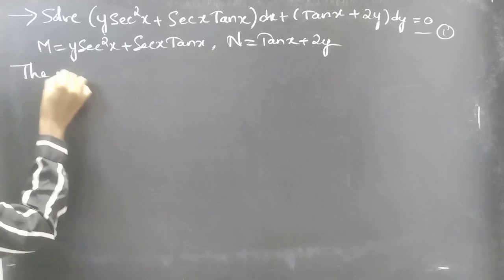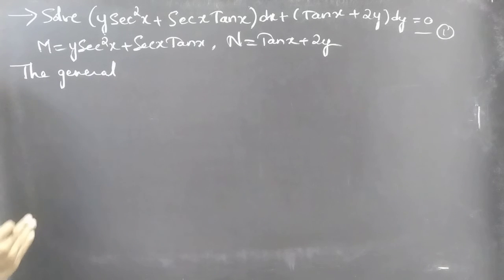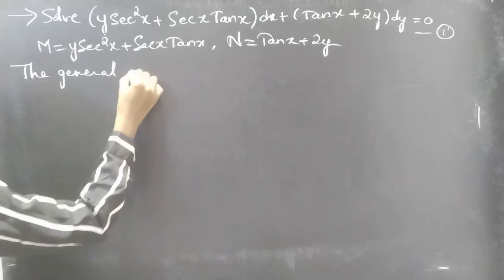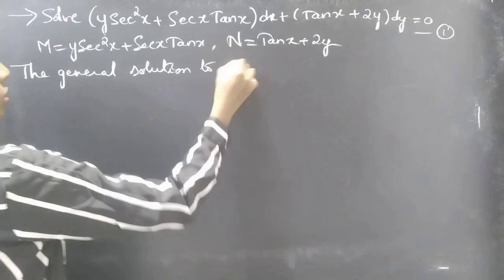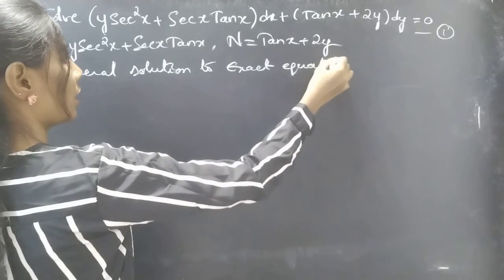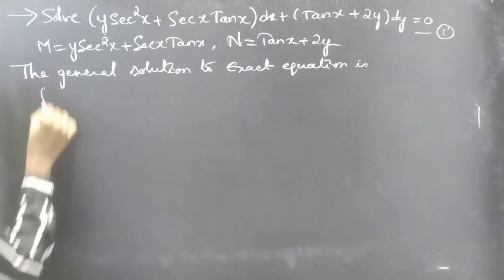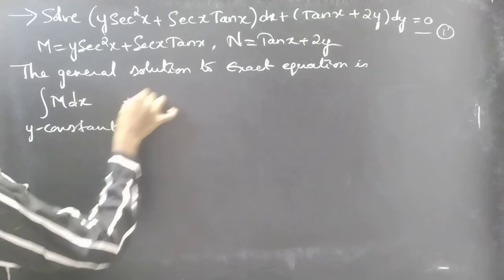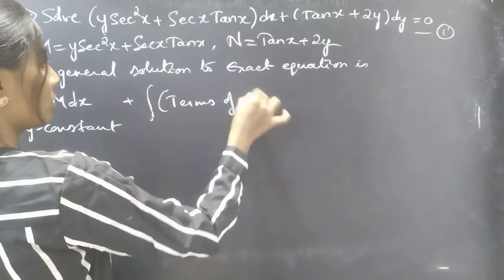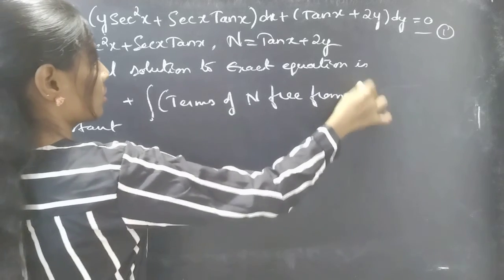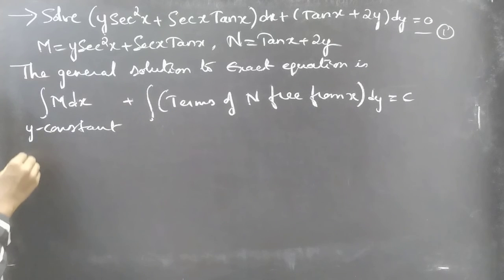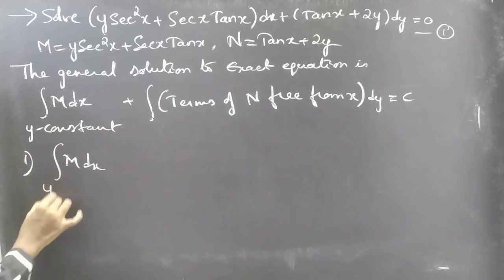The general solution: since the given differential equation is an exact equation, we are now going to find the general solution. The general solution to an exact equation is given by: integral of M dx treating y as constant, plus integral of terms of N free from x into dy, equal to c. Let's now find these two integrals separately.